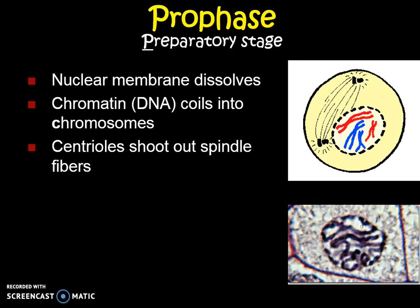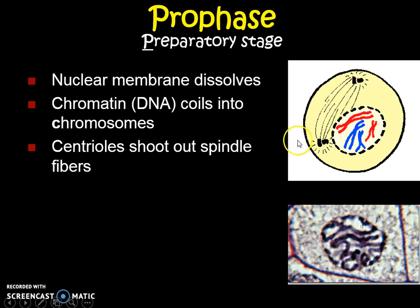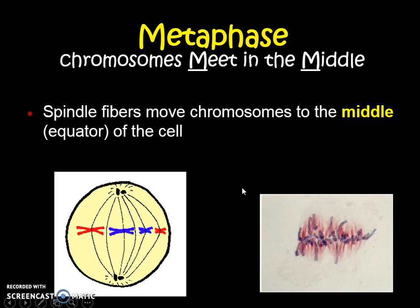We also have a new organelle we've never learned about called the centriole — star, circle, and kiss that, it's a brand new word. I call them the Spider-Men of the cell because they shoot out things called spindle fibers, which are like spider webs. This little macaroni-looking structure is shooting out these little lines, and those are going to do things like Spider-Man does with his spider webs.